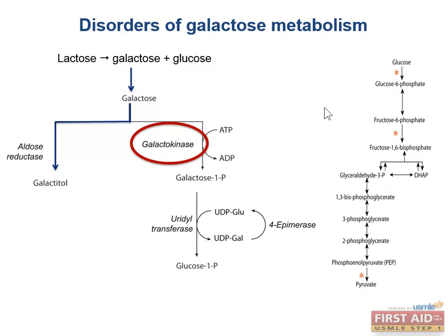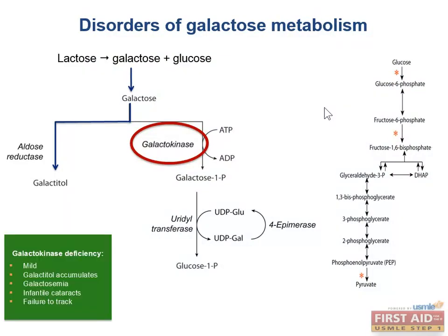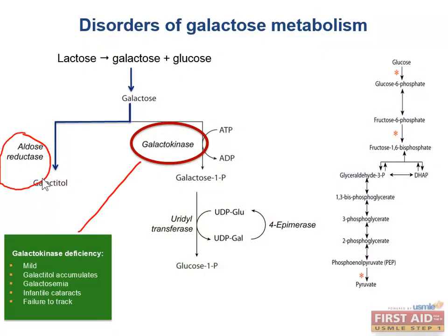What happens if you're missing some of the galactose metabolic enzymes? Galactokinase deficiency is an autosomal recessive deficiency of galactokinase. This prevents the phosphorylation of galactose and instead causes it to be shunted into an alcohol form, galactitol, catalyzed by the enzyme aldose reductase. We'll see this enzyme convert glucose to sorbitol in the next slide.